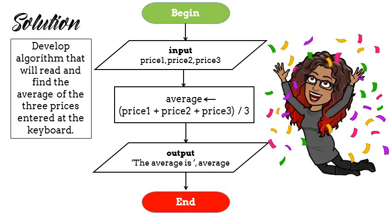Next, we want to find the average so that's the processing. How is the average calculated? Price one is added to price two, which is added to price three. And then the total is divided by three.